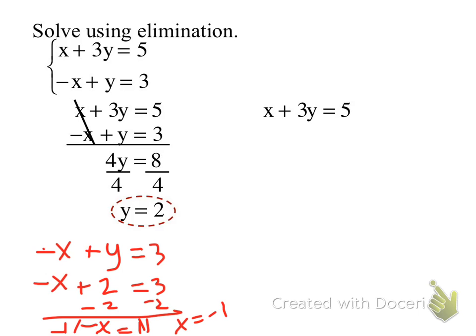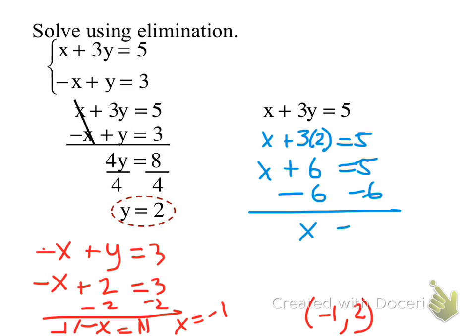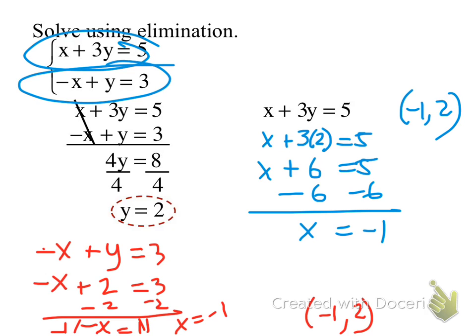So my solution is negative 1 for my x and what did we say the y was? 2. Negative 1 comma 2. But if I chose to put it in the other one, we said our y is 2, x plus 3 times 2, x plus 6 equals 5. Do I get the same x? So again, my solution is negative 1 comma 2. Does it matter which original equation I substitute it into? No.